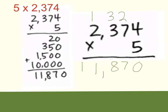Let's now compare our standard algorithm to our partial products algorithm. Starting in our ones place: 5 times 4 is 20. Next our tens place: 7 tens times 5 ones gives me 35 tens, which is 350. Then we multiply our hundreds place: 5 times 3 gives me 15 hundreds, which is 1,500. And then our thousands place: 5 times 2 is 10, so we have 10 thousands.